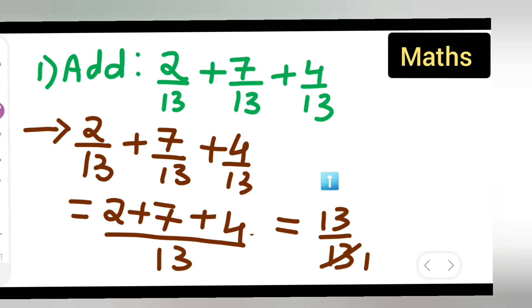Now cancel: 13/13 = 1. Your answer is 1. I hope you understood how to add fractions with the same denominator. When denominators are the same, it is easy to add. Thanks for watching.